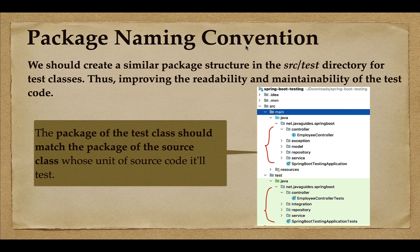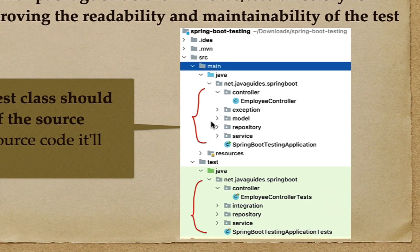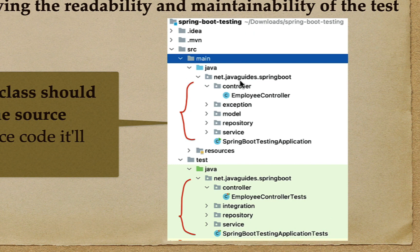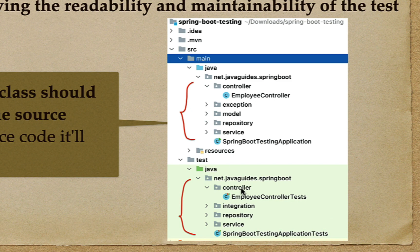The next best practice is package naming conventions. This is very important — you should create a similar package structure in the src/test directory for your test classes. This will improve the readability and maintainability of the test code. For example, in a Spring Boot application we typically create packages like controller, model, repository, and service.